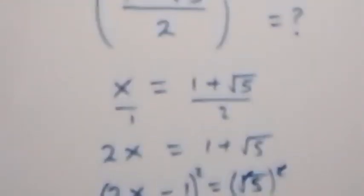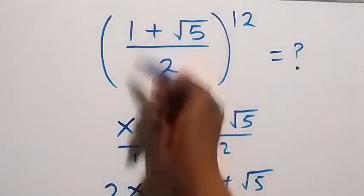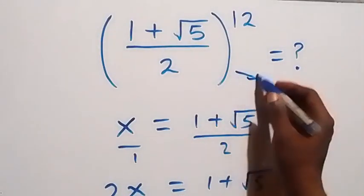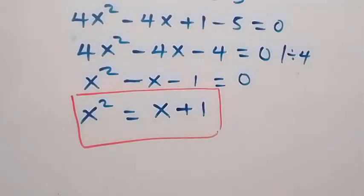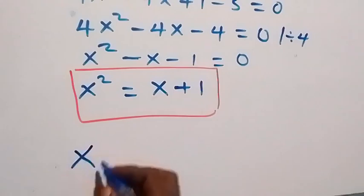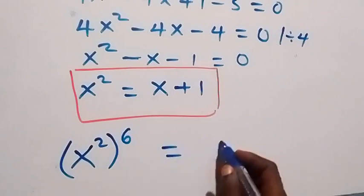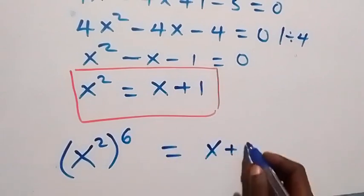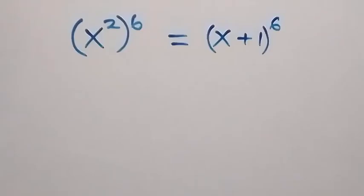From here we can use this to find x raised to power 12, because x is representing what is inside. So what we are finding is x raised to power 12. To get x raised to power 12 we can multiply both sides by 6, and this will give us x squared raised to power 6 equals to x plus 1 also raised to power 6.